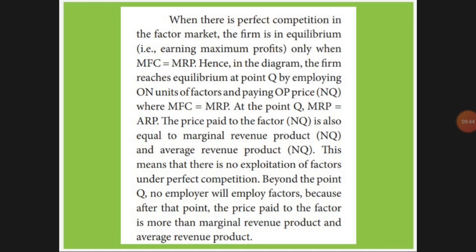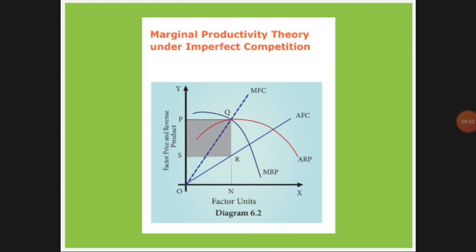Next, the theory applied to imperfect competition. In the imperfect competition diagram, the AFC is an increasing curve (blue color curve), meaning average factor cost is increasing. MFC (dotted line) is also increasing and should be above the AFC. Here Q is the point where MFC equals MRP — the maximum point the firm achieves — so the employer will stop producing and won't go beyond that point.